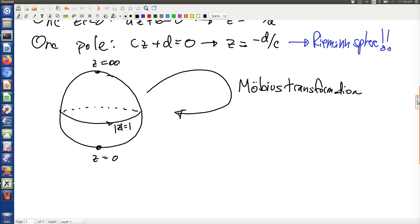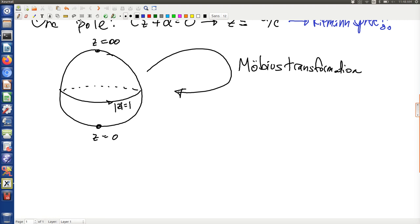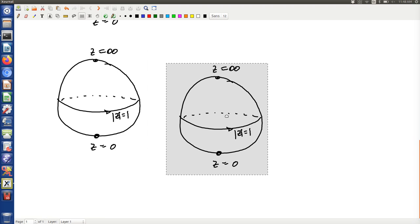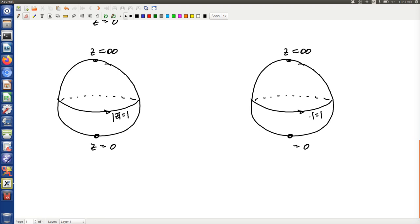So instead of thinking about it in terms of a self-map, which it is, let's think about it in terms of this transformation taking z to w.